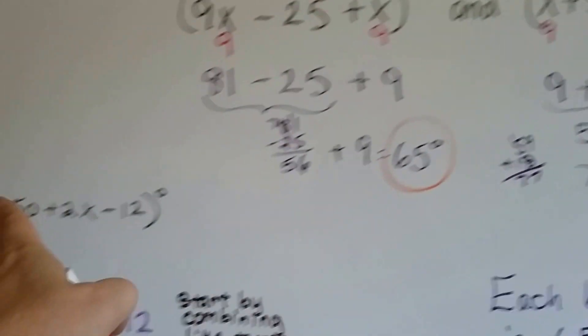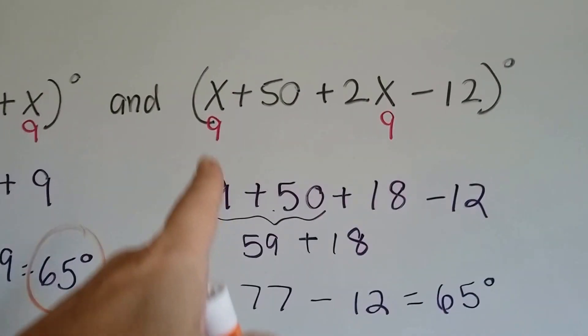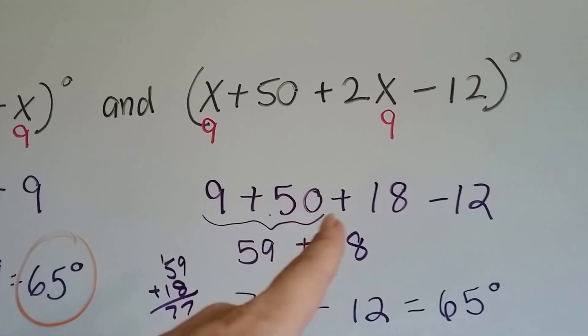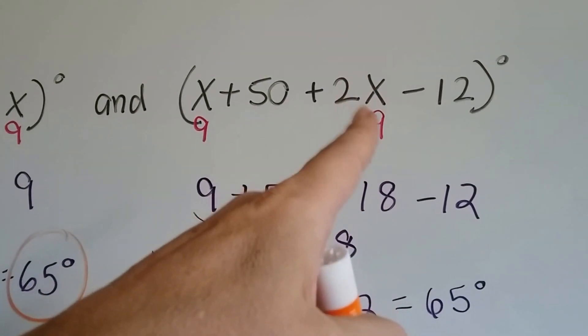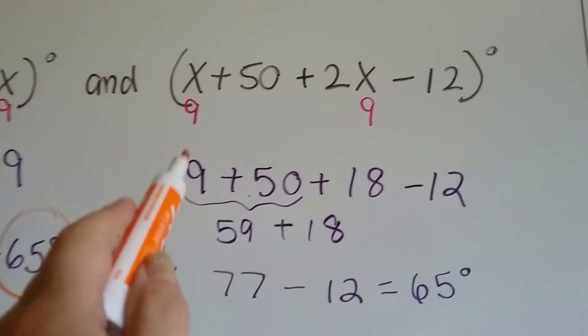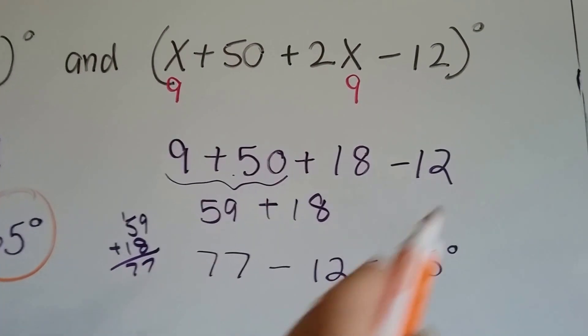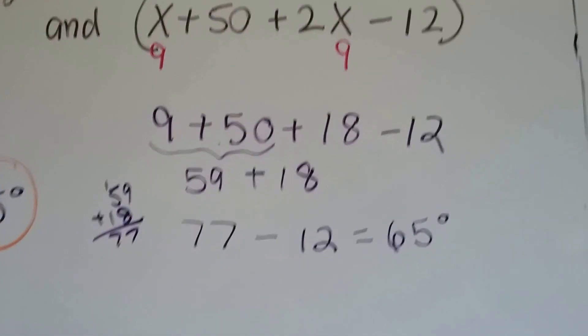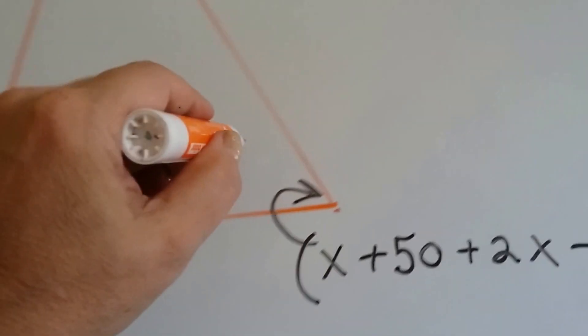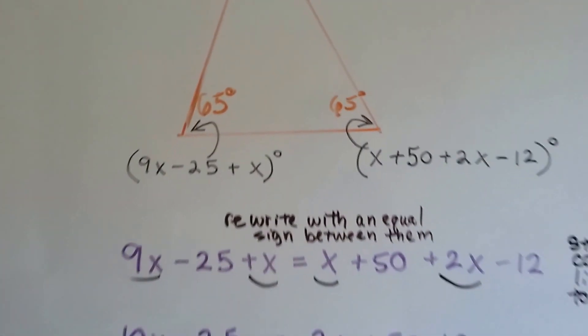Now, let's do this one. So we plug the 9 in everywhere there's an x, and we get 9 plus 50 plus 18, 2 times 9 is 18, minus the 12 degrees. So 9 plus 50 is 59, plus the 18 is 77, and minus the 12. Look at that. It's also 65. So the two angles are equal. This angle is also 65 degrees. And see how we did that?